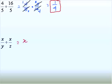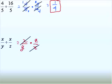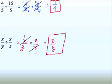For x over y divided by x over z, we change to multiplication and write the reciprocal of x over z, which is z over x. We can cancel the x's since one is in the numerator and one is in the denominator, leaving 1 times z over 1 times y, which gives z over y as the final answer.